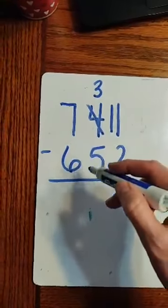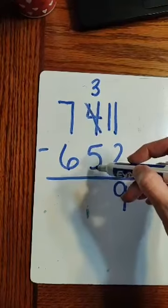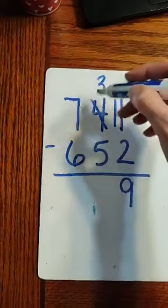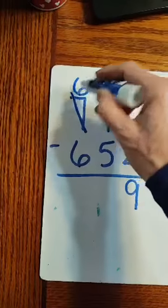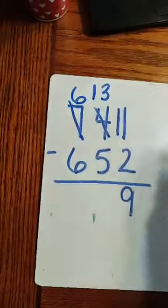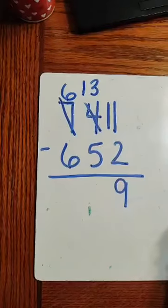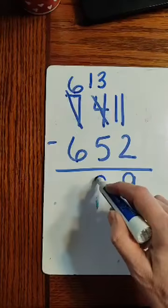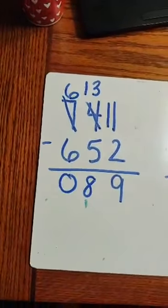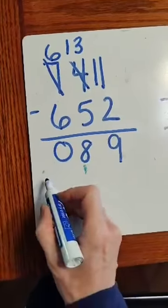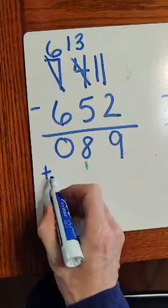So I move back to my 10s and I see 3 minus 5. And again, bigger bottom, better borrow. So I go next door and borrow a 10. So it gets 1 down and I give it a 10. 13 minus 5, yes 8. 6 minus 6, 0. So 741 minus 652 is 89.